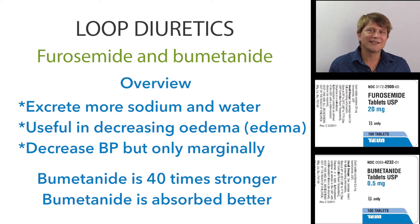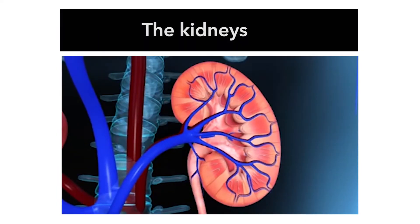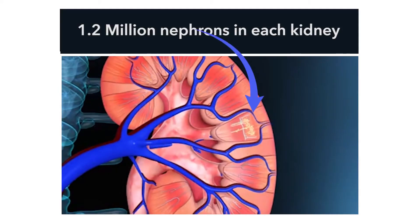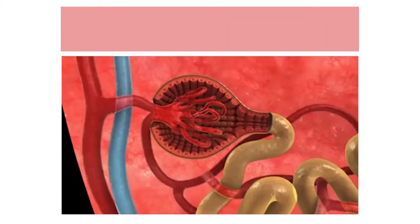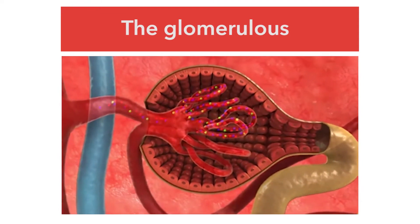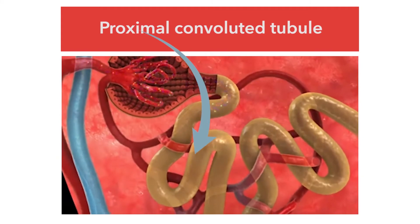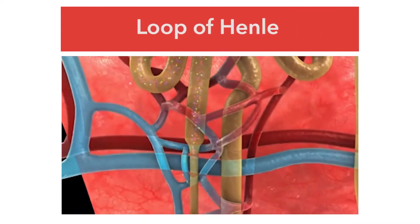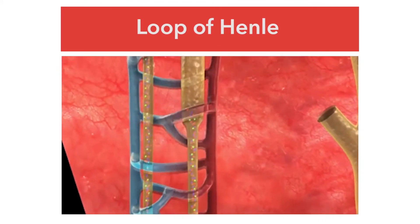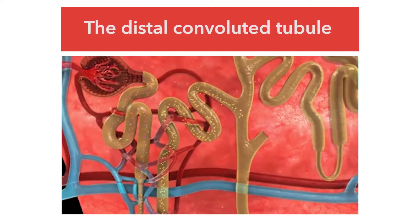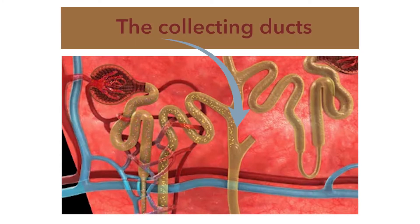The loop diuretics work at the level of the kidneys. We normally have two kidneys and each kidney has an average of 1.2 million functional units called the nephron. In the nephron, blood is filtered through the glomerulus and then the filtrate or pre-urine goes through a number of different areas: the proximal convoluted tubule, the descending loop of Henle, the ascending loop of Henle, the distal convoluted tubule, and then the collecting ducts. The filtrate that remains at the end of the collecting ducts becomes the urine and cannot be reabsorbed back into the blood.